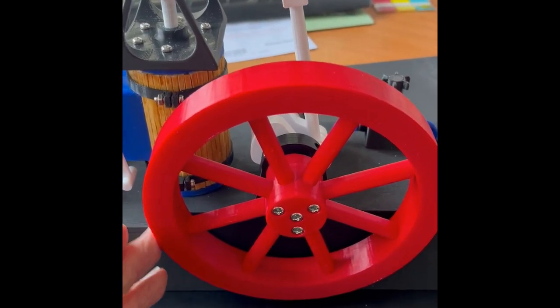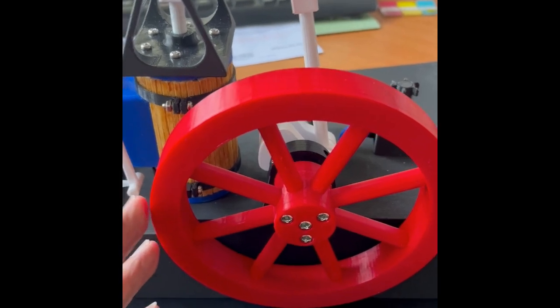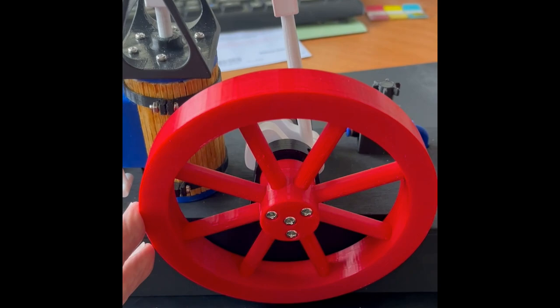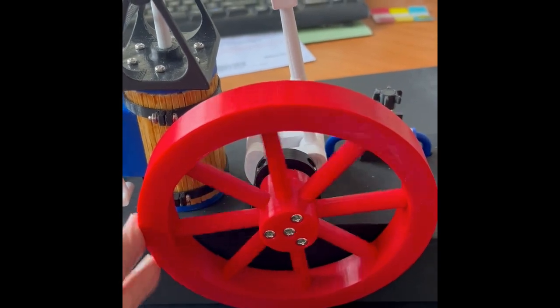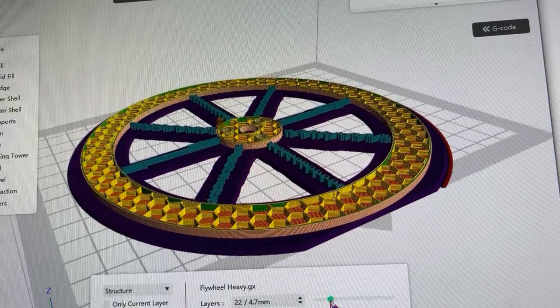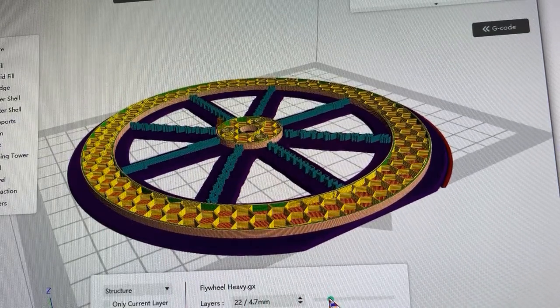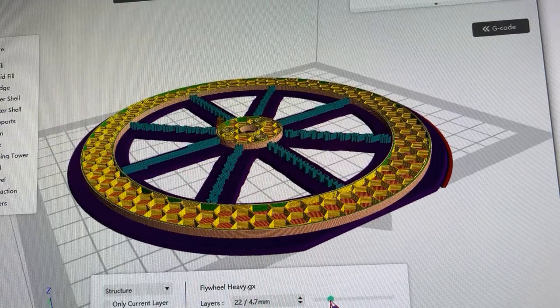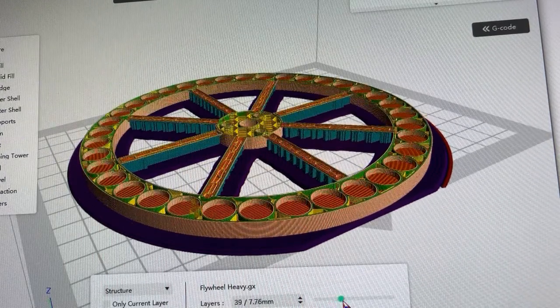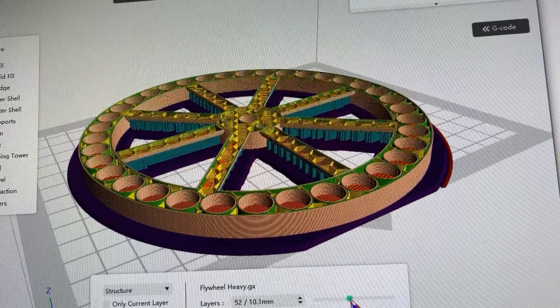You need to pause your 3D print in order to put the inserts in. I've used 10 millimeter rod, 12 millimeters long. There are 36 of them and it works quite well. So this is the slicing program to show the flywheel and the holes that I provided for the 10 millimeter metal inserts.